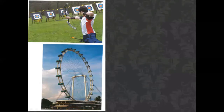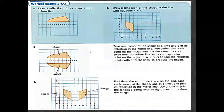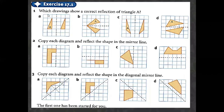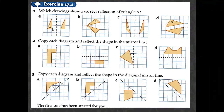Now here are some examples. First, which drawing shows the correct reflection of a triangle? When you reflect this triangle, it will be the opposite. In this first case it looks the same, so it is not a correct reflection — it should make a right triangle toward the left side, so that option is not possible.